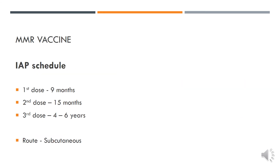The MMR vaccine is currently not given under the National Immunization Schedule; what is given is the MR vaccine. Under the EPI schedule, the mumps vaccine along with measles and rubella is given as follows: the first dose at 9 months of age, the second dose at 15 months of age, and the third dose at 4–6 years. The route of administration is subcutaneous.